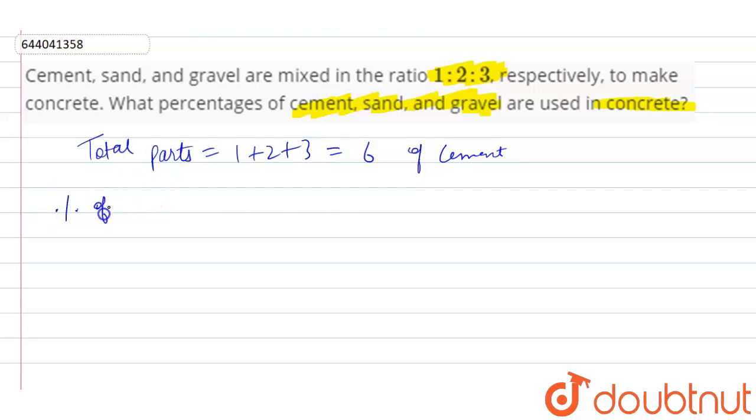percentage of cement in concrete. Sorry, this is concrete. The part is 1 and total is 6. 1 upon 6 into 100, that is 100 by 6, that is 16.66. This is percentage of cement in concrete.